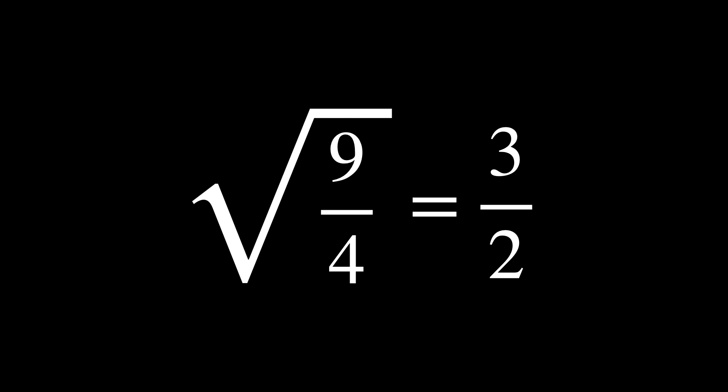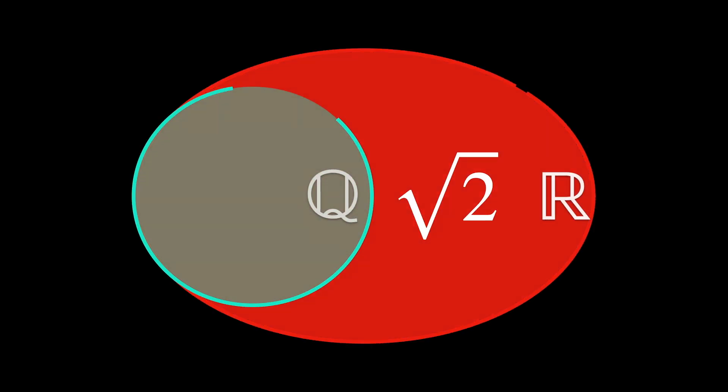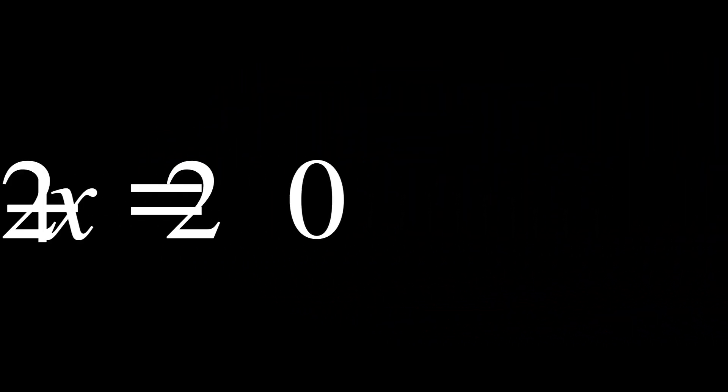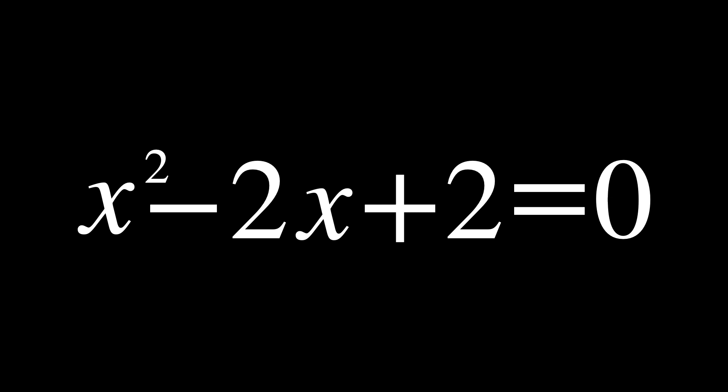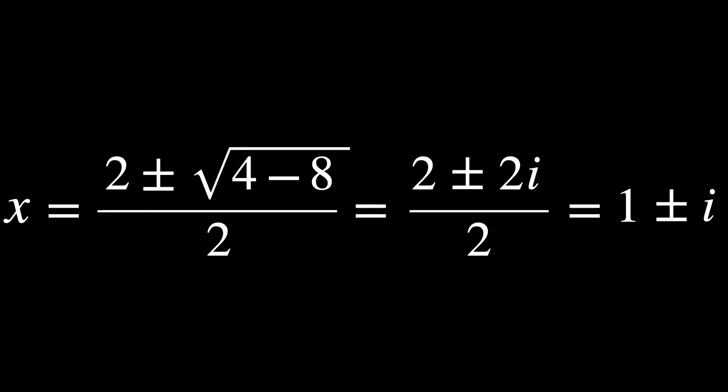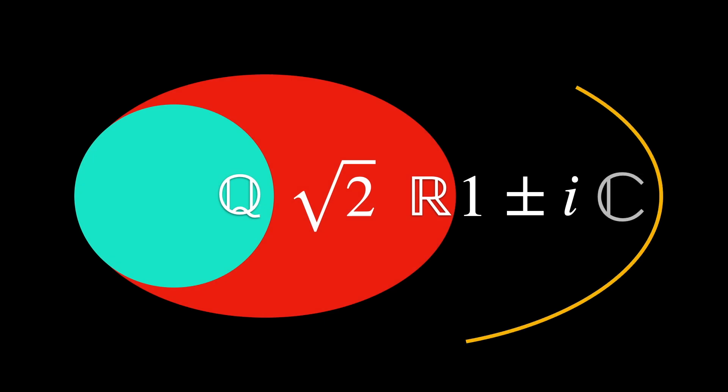The process of solving a polynomial can be seen as extending the field of rational numbers to include the roots, or solutions, of the polynomial. Quadratic equations often require taking a square root. Some square roots are rational, but the square root of 2 is in the field of real numbers, beyond rational numbers. Some equations like x squared minus 2x plus 2 equals 0 give solutions that aren't even real numbers, taking us into the realm of complex numbers. Thus, introducing radicals reaches us far beyond the rational numbers.